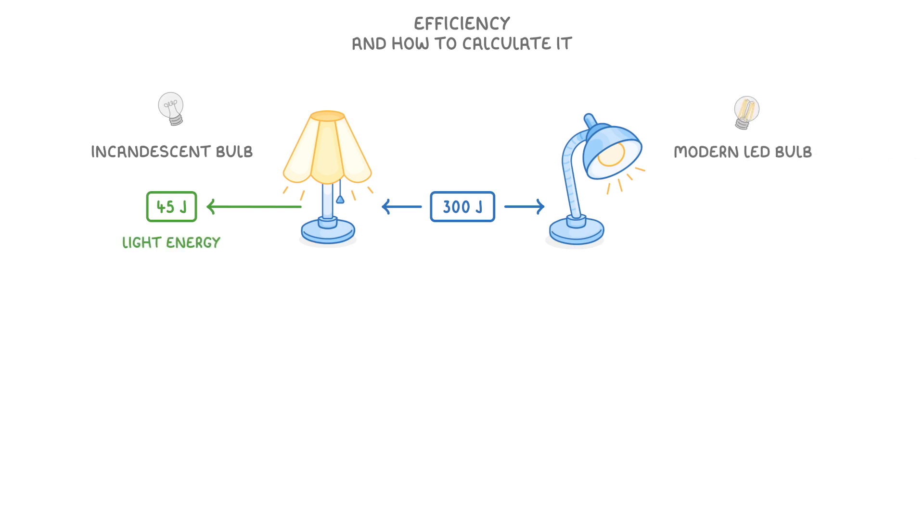Meanwhile, the other one has a modern LED bulb, which converts 225 joules into light. How many times more efficient is the LED lamp?